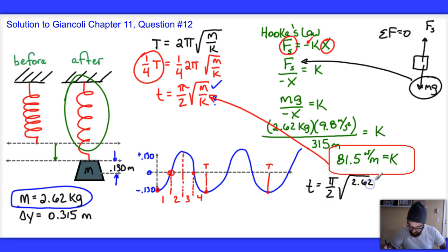The period is equal to (π/2) times the square root of the mass, 2.62 kilograms, divided by my new constant of elasticity, 81.5 Newtons per meter.